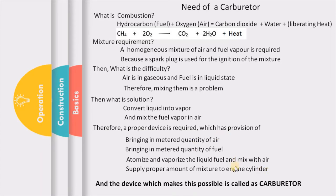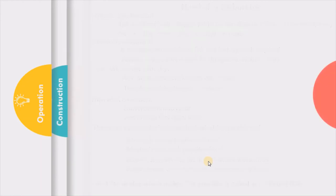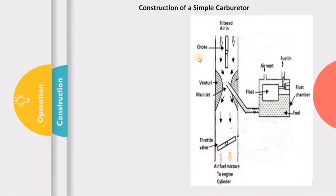The device that does all these functions — metering the air and fuel, atomizing the fuel, converting the fuel into vapor, mixing the fuel vapor with air to prepare the mixture, and supplying this mixture in the required quantity to the engine cylinder — is what we call a carburetor. Let us now see the constructional details of a carburetor.